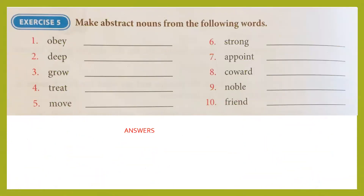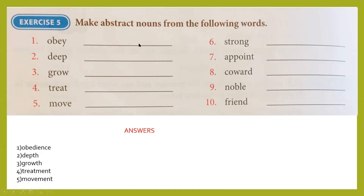Exercise 5: make abstract nouns from the following words. The words are given and you have to form abstract nouns from them — abstract nouns you cannot see or touch but can imagine. Try to guess the answers on your own and write them in the blank lines. Number 1, obey — abstract noun is obedience. Number 2, deep — depth. Number 3, grow — growth. Number 4, treat — treatment. Number 5, move — movement.